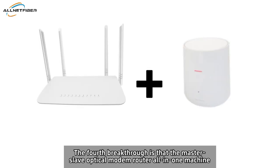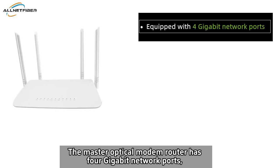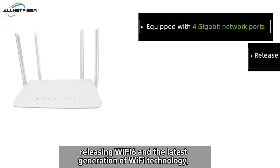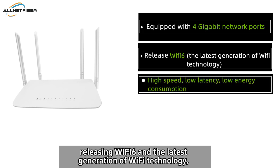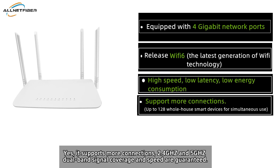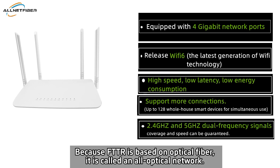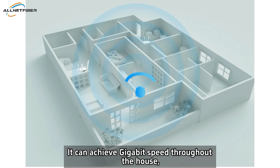The fourth breakthrough is that the Master-Slave optical modem router all-in-one machine is equipped with currently more advanced capabilities. The Master optical modem router has 4 gigabit network ports, releasing Wi-Fi 6 — the latest generation of Wi-Fi technology — with high speed, low latency, and low power consumption. It supports more connections, with 2.4 GHz and 5 GHz dual-band signal coverage, ensuring speed is guaranteed. Because FTTR is based on optical fiber, it is called an all-optical network, and it can achieve gigabit speed throughout the house.